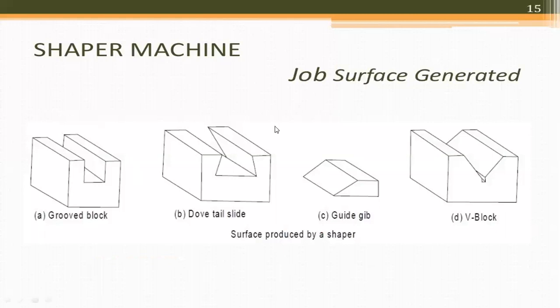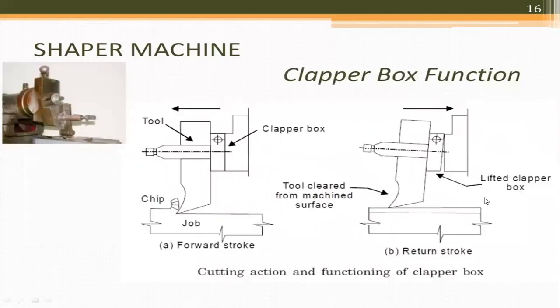These are the surfaces generated by the Shaper machine: groove block, dovetail slide, guide chip, and V block. The clapper function is fixed in the RAM and is used for machining angled surfaces by tilting the tool head or tool holder.